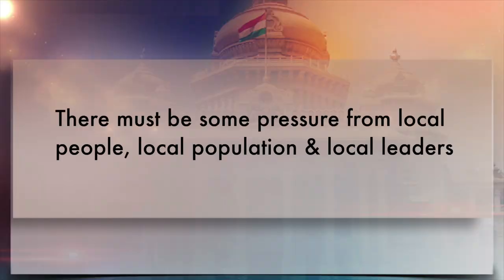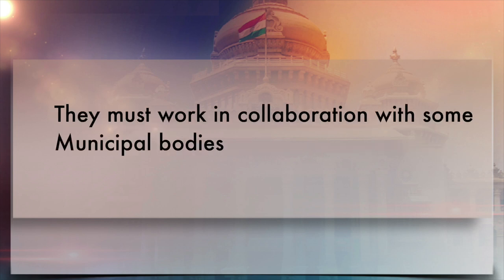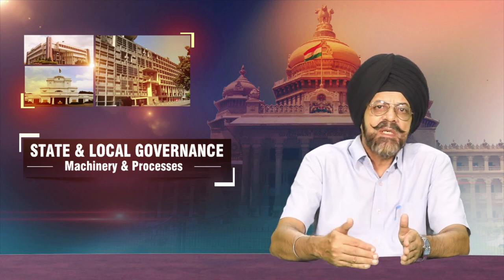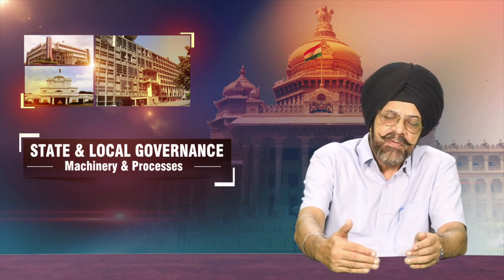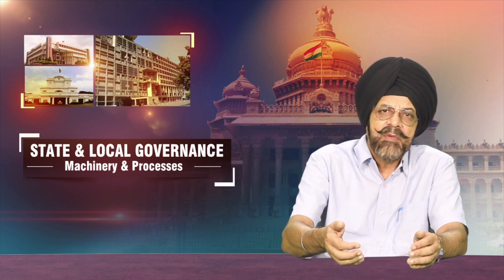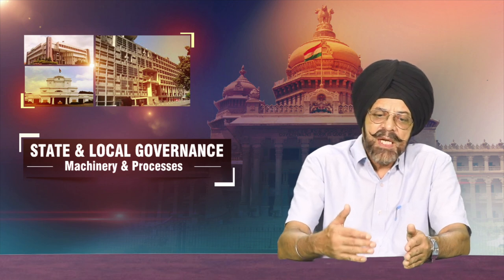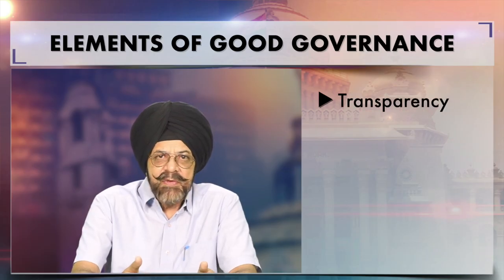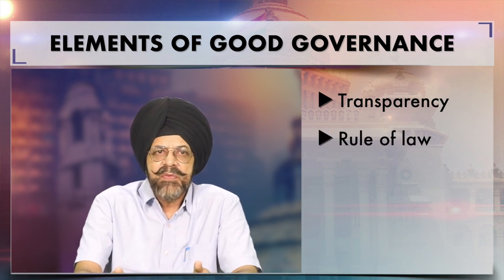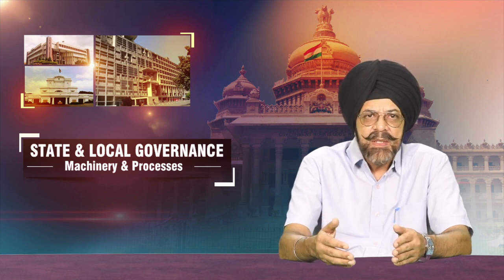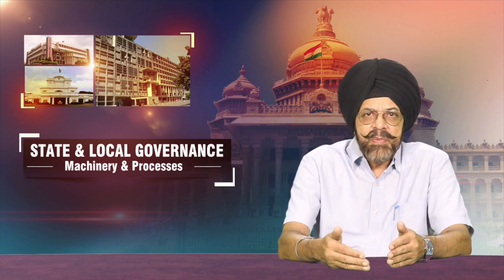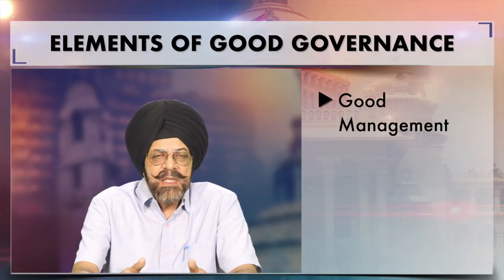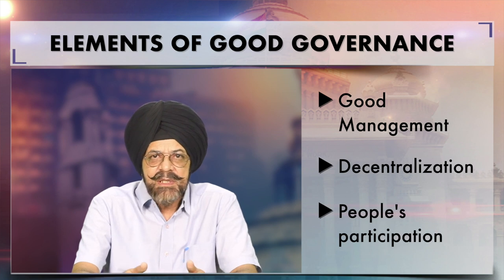Along with this, there must be pressure from local people, local population, and local leaders — they must work in collaboration with these municipal bodies. The elements of good governance, which are also a part of developmental programs for urban development, include: transparency — that is openness in working; rule of law — working in accordance with rules, not by the whims of people; openness; good management; decentralization; people's participation; and responsiveness.